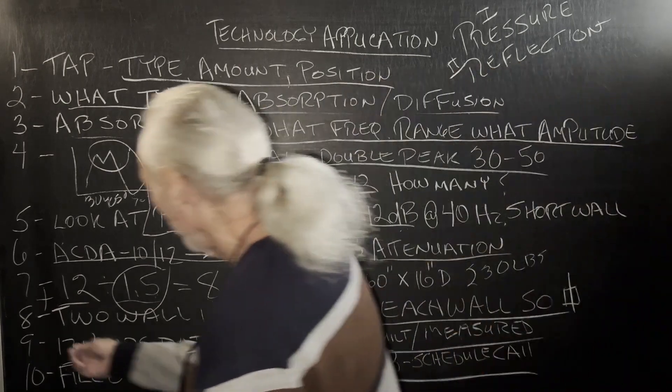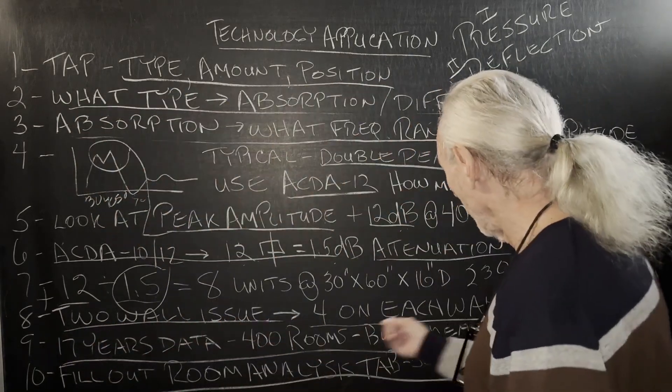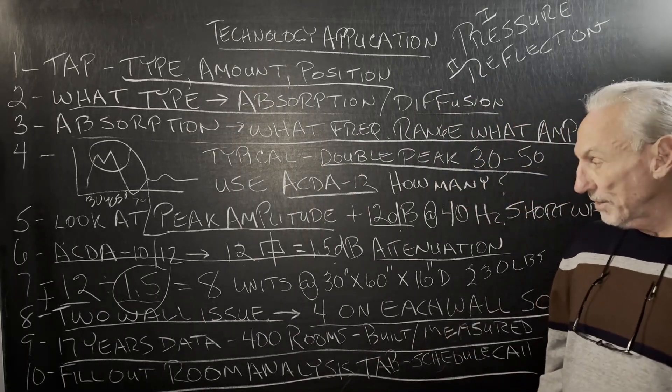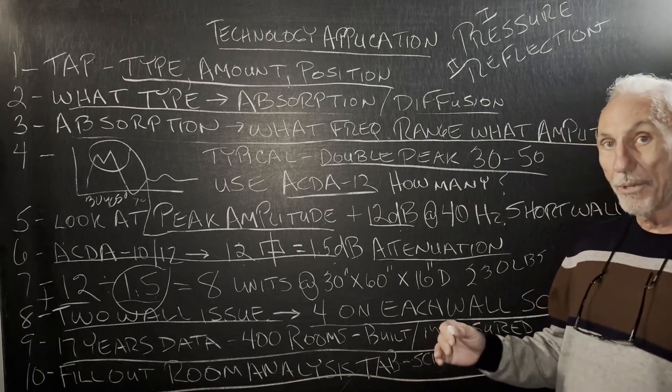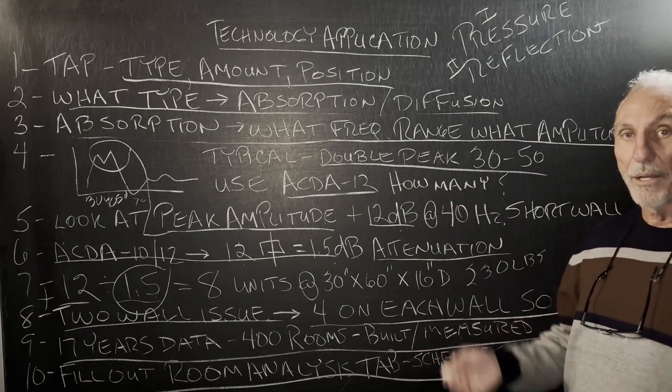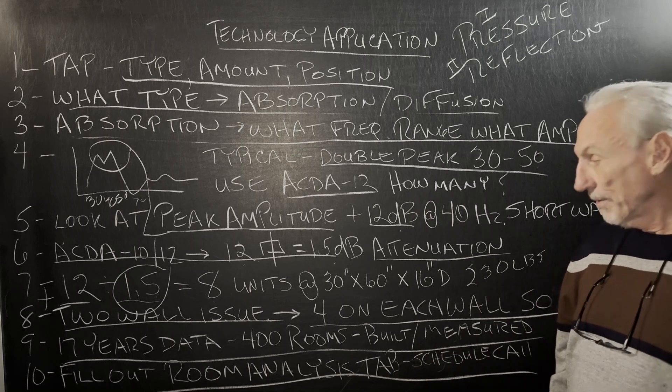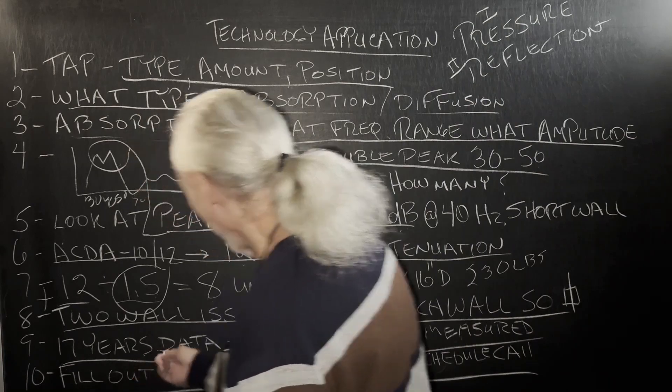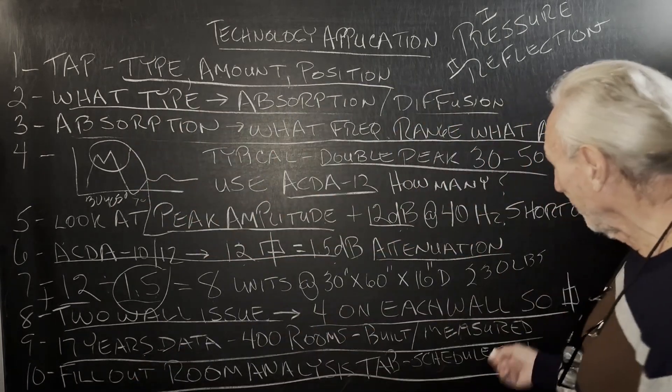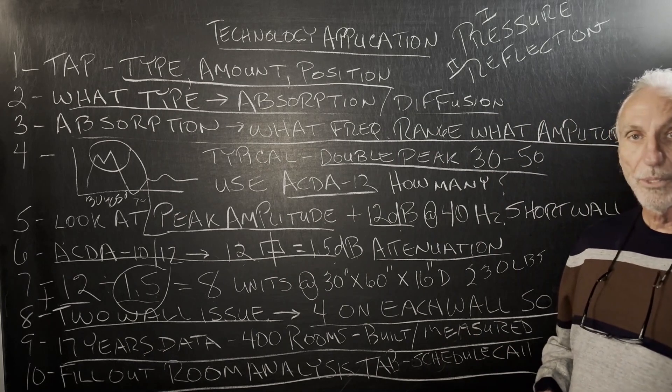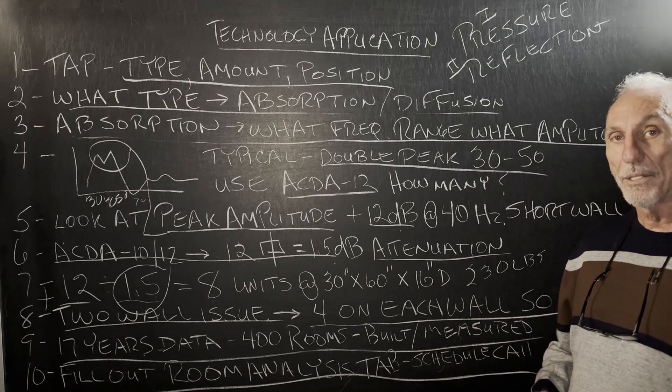So since it's a two wall issue, we put four on each wall, like I said, 50 square feet, and that's our start point. We want a higher resolution. We don't have any more footprint or more space to go. We stack on top. We make modules. We can help you with figuring all that out. So we've had 17 years of data, 400 rooms that we built and measured. So we have a really good handle on your room size and volume and what it takes to fix.